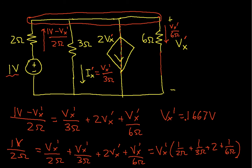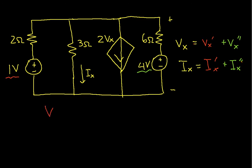Correcting the decimal: Vx prime is 0.1667 volts. Then Ix prime, which is Vx prime over 3 ohms, equals 0.0555 amps. So from the 1-volt source we have Vx prime = 0.1667 volts and Ix prime = 0.0555 amps.